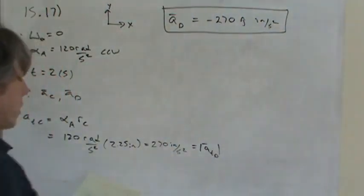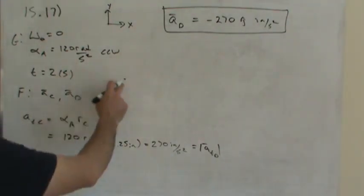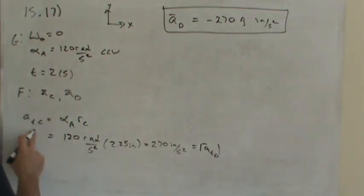So there's the vector acceleration of point D. The vector acceleration of point C is going to be a little bit different, though, because not only does C have a tangential acceleration like D does, but point C has a normal acceleration.